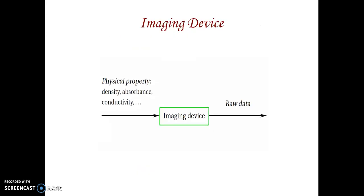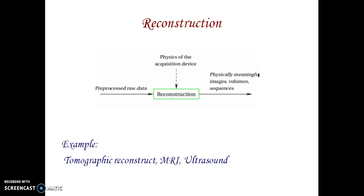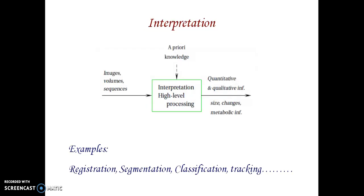Physical properties such as density, absorption, and conductivity are input to the imaging device, producing raw data. In the preprocessing step, raw data is processed using prior knowledge: noise is removed, contrast is enhanced, outliers are removed, and time and space filtering is applied. The preprocessed data is then used for image reconstruction, producing physically meaningful images — sequences, volumes, tomographic reconstructions, MRI, and ultrasound. Finally, interpretation provides quantitative and qualitative information based on size changes and metabolic information.